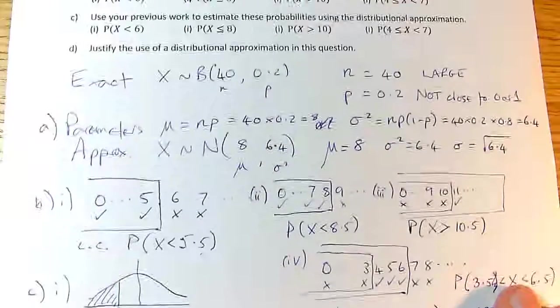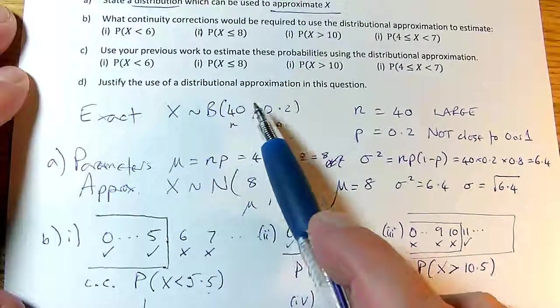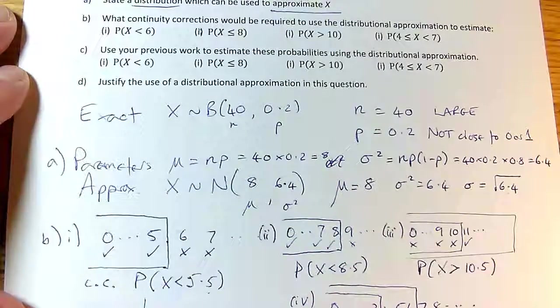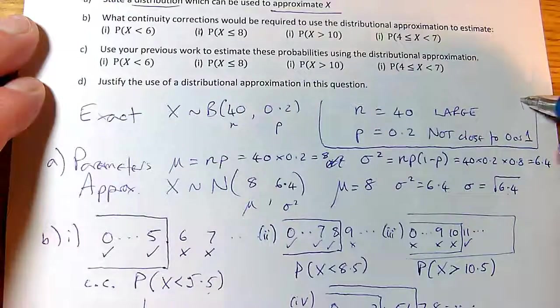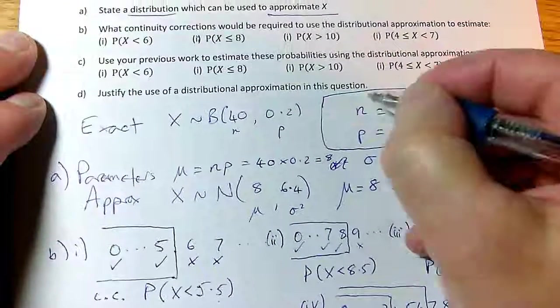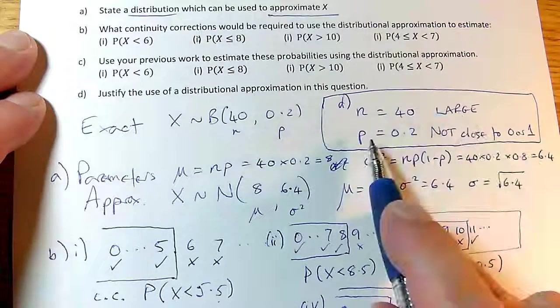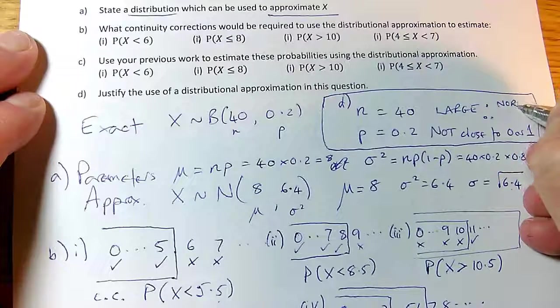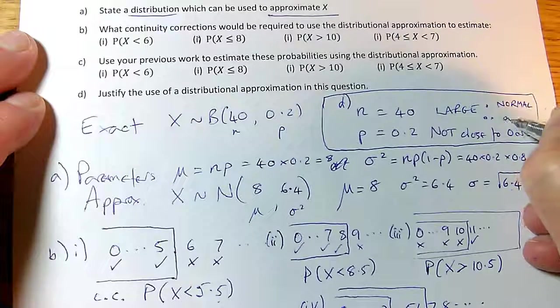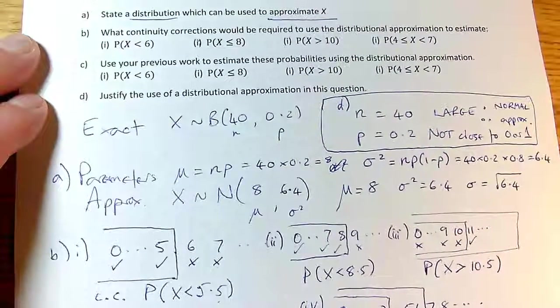Marathon video. But the last thing we've got to do is justify the use of a distributional approximation in this question. And in fact, I have already done it. I've run out of space at the bottom of my page. But this is my answer to D. N is large, p is not close to 0 or 1. Therefore, I can use a normal approximation to a binomial. So that's my justification I need for part D.